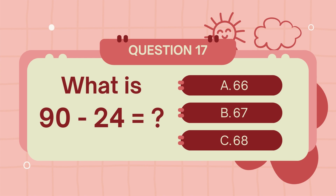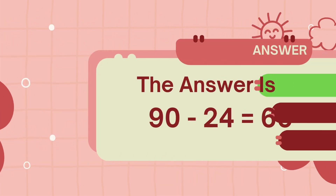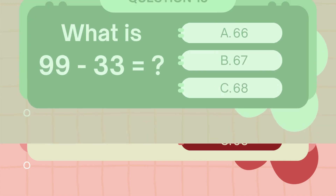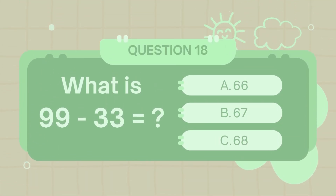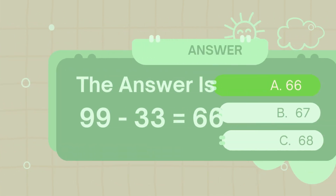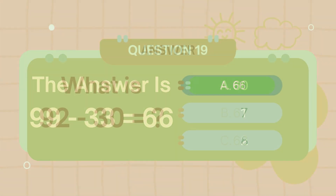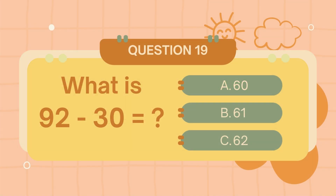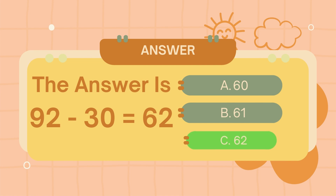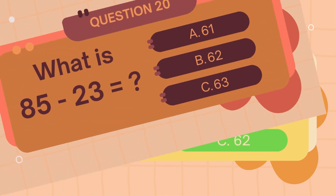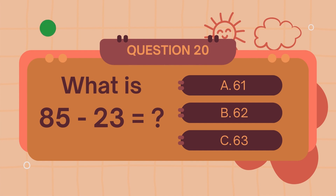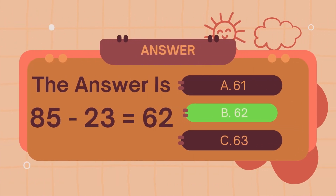What is 90 minus 24? The answer is 66. What is 99 minus 33? The answer is 66. What is 92 minus 30? The answer is 62. What is 85 minus 23? The answer is 62.